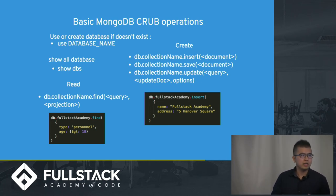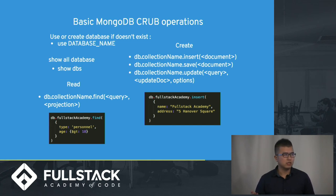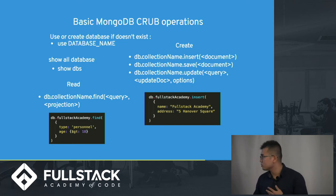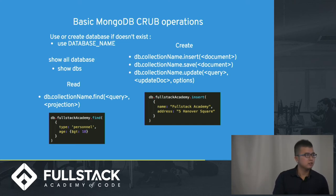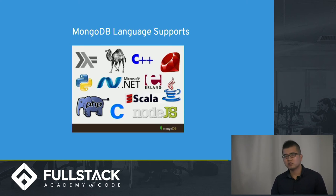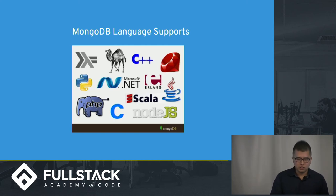To create, you just do db.collection.insert() and then specify the document, which uses JSON syntax, so you just insert the whole JSON object. You can also insert multiple JSON documents in a single insert. MongoDB also comes with multiple language support, so if JavaScript is not your preferred language, you can use Scala, C++, or PHP — there's likely a driver for a language you like.